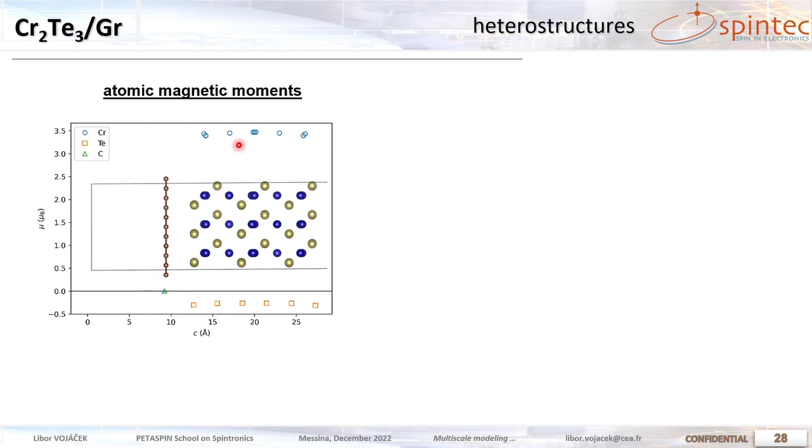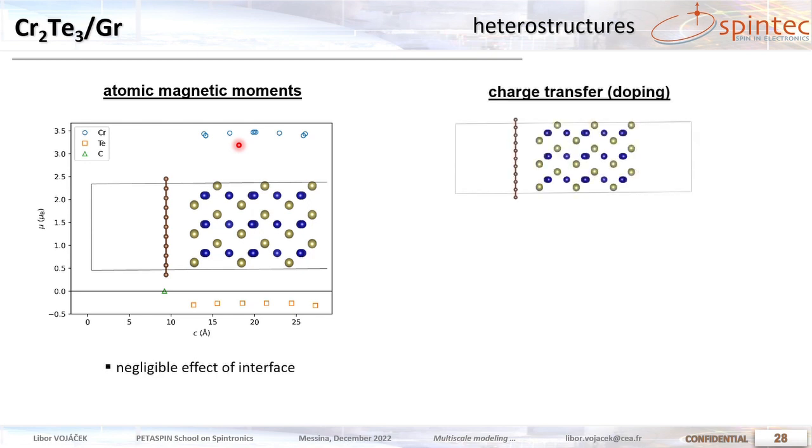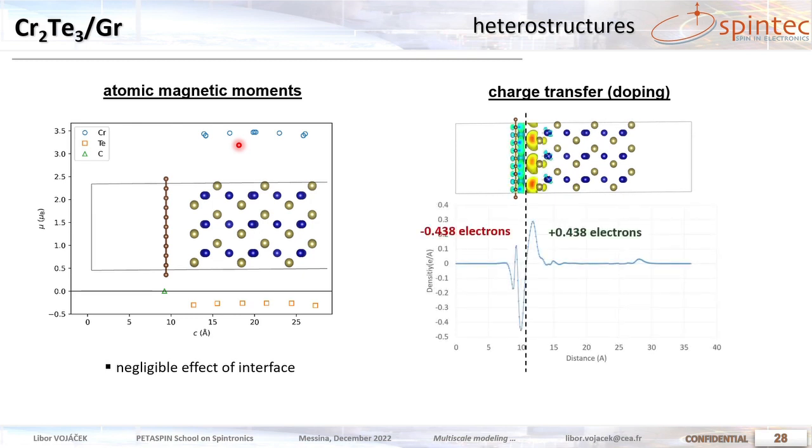But what we do see is a very strong charge transfer, especially in the case of graphene. Here doping the chromium ditelluride by about 0.4 electrons, which also causes a large dipole formation at the interface. And this might actually explain some peculiar effects that our experimental colleagues see in the transport measurements with chromium ditelluride on graphene.